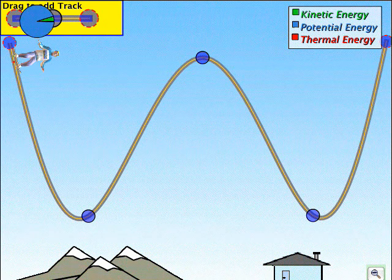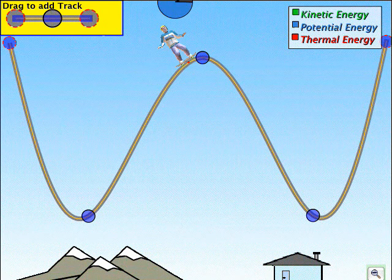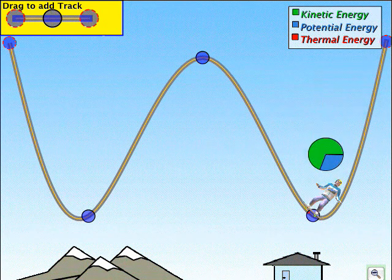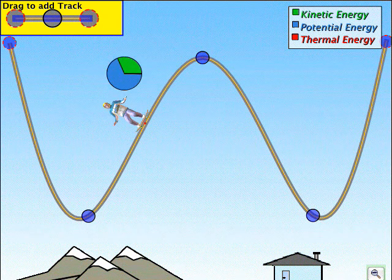Here, for example, a pie graph is shown above the skater, and the entire pie is, of course, the total energy, which remains constant.